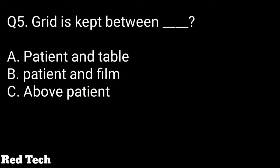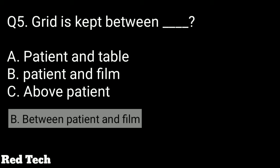Question number five: a grid is kept between which of the following? The options are patient and table, patient and film, or above the patient. The right answer is between the patient and film. This is mainly used when imaging thick and dense parts.